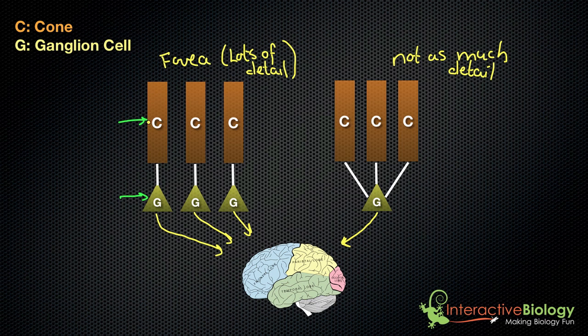And this can go for cones or rods. And I draw this simply with three cones, but you can get thousands of cones that are connected to one ganglion cell. And of course, that's not going to give you as much detail. But you're still going to get some information that can go to the brain and be interpreted so that you can see what the objects are with some detail, but not as much.